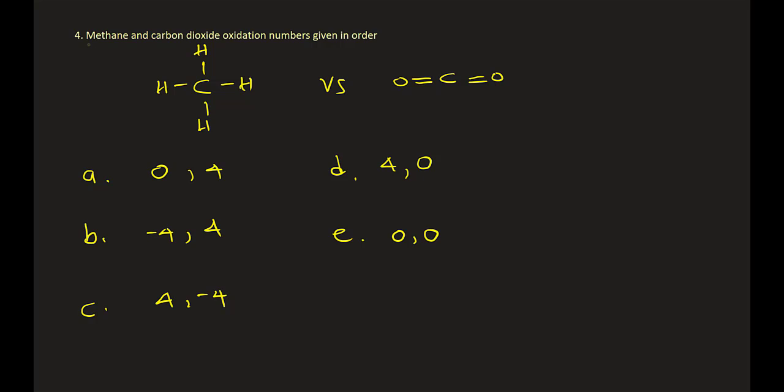Now this is a much simpler one. Very specific strategy you need here. Methane and carbon dioxide oxidation numbers. This is an easy way to do it if you're solving problems in an exam. Look at this one. First column and second column, you need to know plus one and plus two.